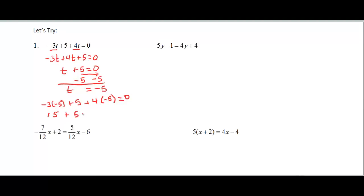4 times negative 5 is minus 20. And then order of operations tells us to add these first two. So 20 minus 20 is equal to 0, and we know that to be true. So t is equal to negative 5.